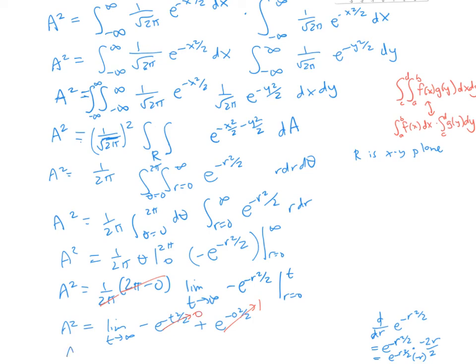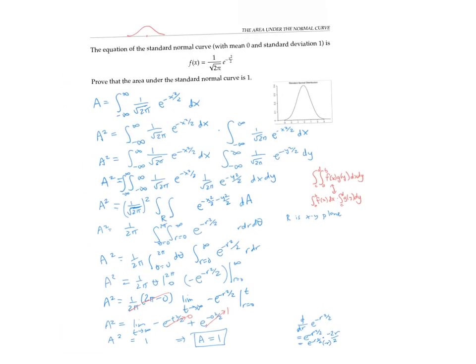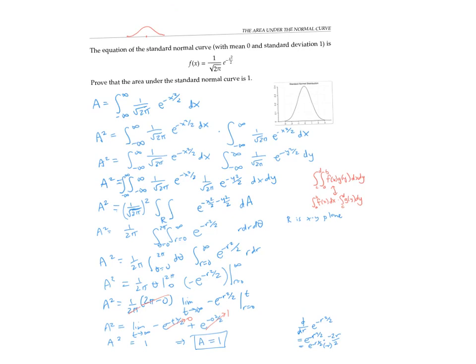So the end result is that the area squared is equal to one. And therefore, the area equals one, just as we wanted to prove. So 1 over the square root of 2π turned out to be the perfect factor to make the area under our standard normal curve equal to one.